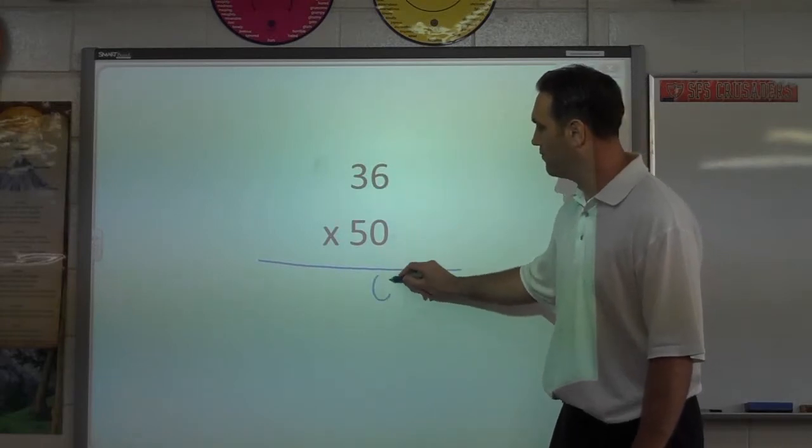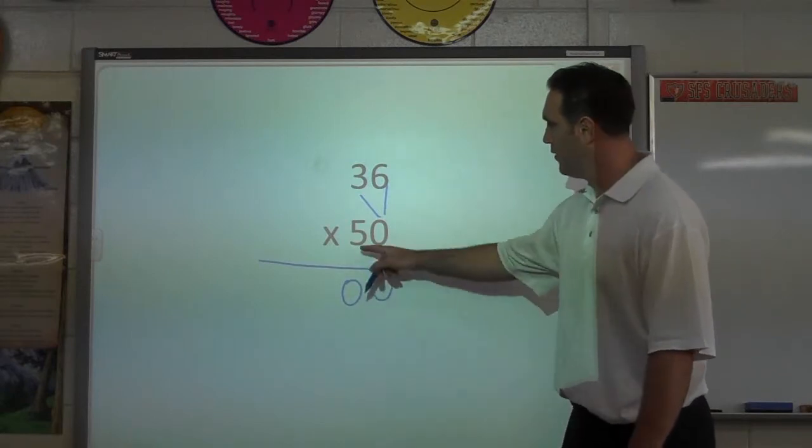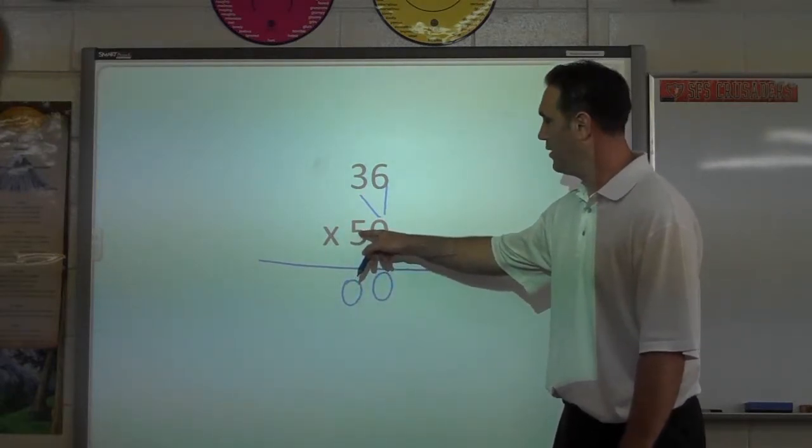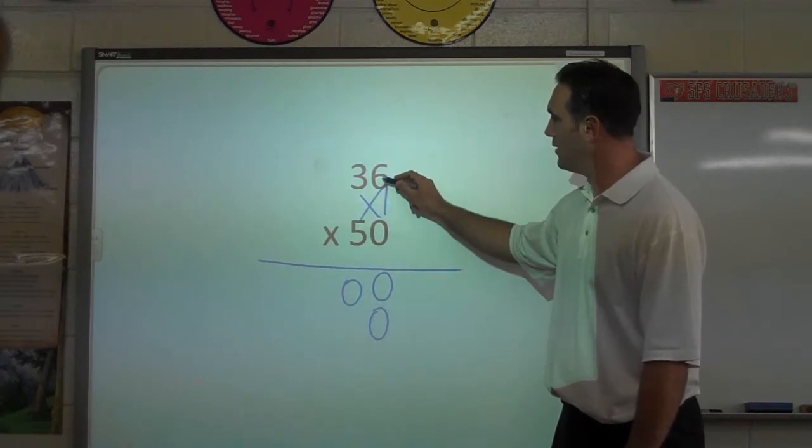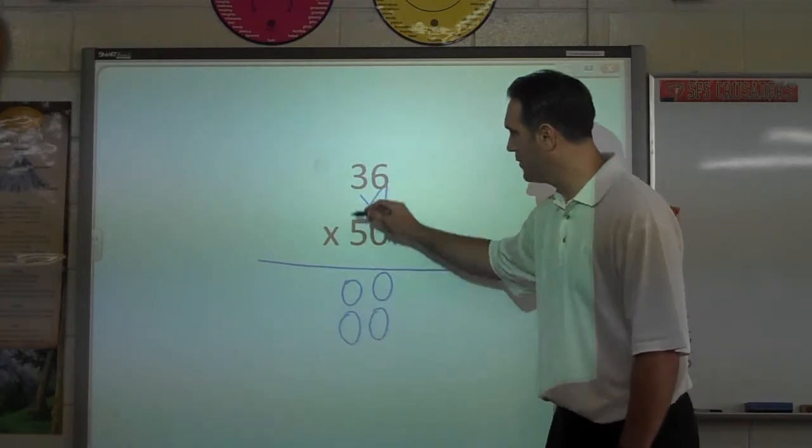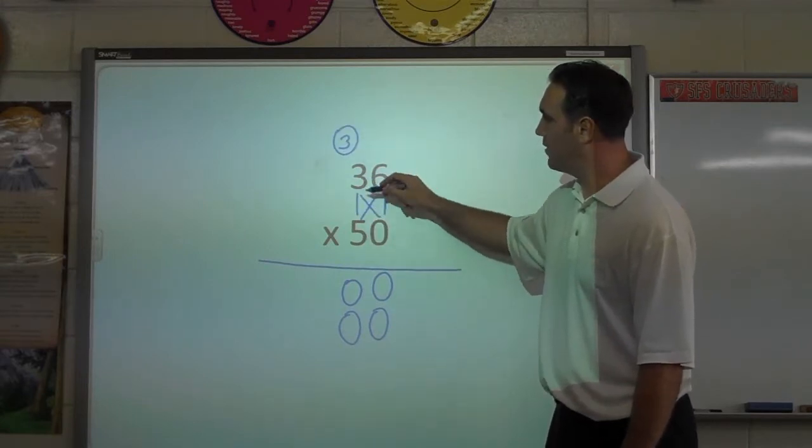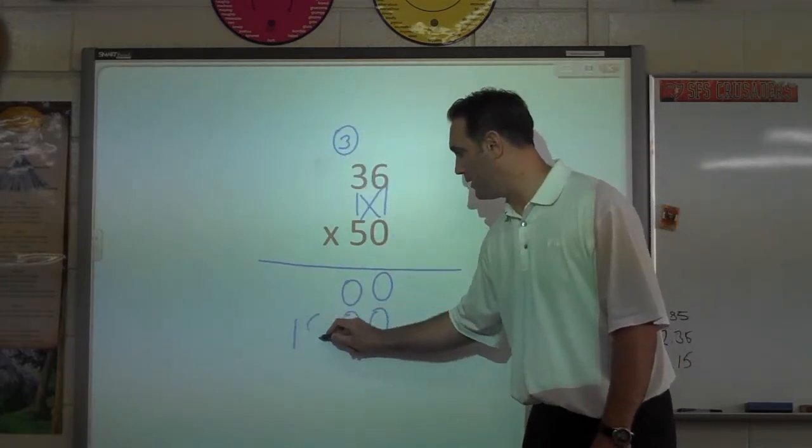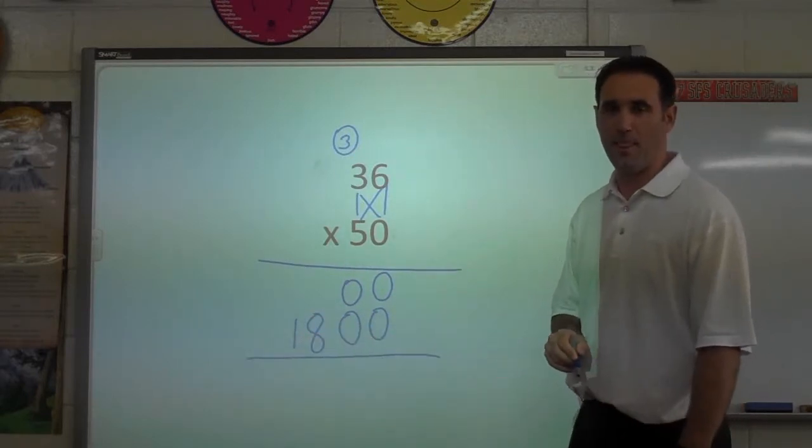Zero times six, zero. Zero times three, zero. We're multiplying here by 50, so we need to drop in a zero. Five times six, that's 30. I'm going to put my three up there. And five times three is 15, add the three, 18. Now if we add them together, it's obvious the answer is 1800.